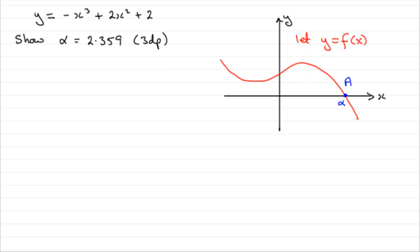Let me explain. What we've got here is if I was to do a number line and take the root alpha, as they say, which is 2.359, let's just put that down here, 2.359. That's given to three decimal places.